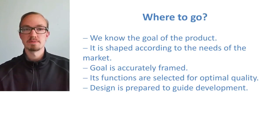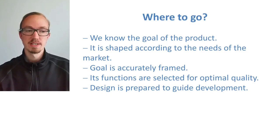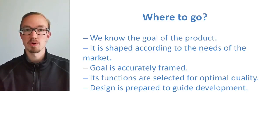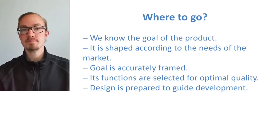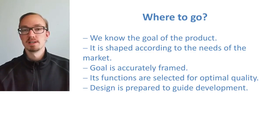Let's go back a second. Where do we stand and what have we done already? We know the goal of the product, we have thought about what we want to do, and we discovered exactly what kind of plan we have. It is shaped according to the needs of the market because after going through our ideation, we went out and looked at competition and what kind of other products are on the market. We know that our goal is accurately framed because we adapted our product to exactly the niche we wanted. Its functions are selected for optimal quality, we went through the functional analysis and then the part solutions, and we got the best solutions we could find. Our design is prepared to guide development, so we know exactly from the combined solution how our product at the end might look like.